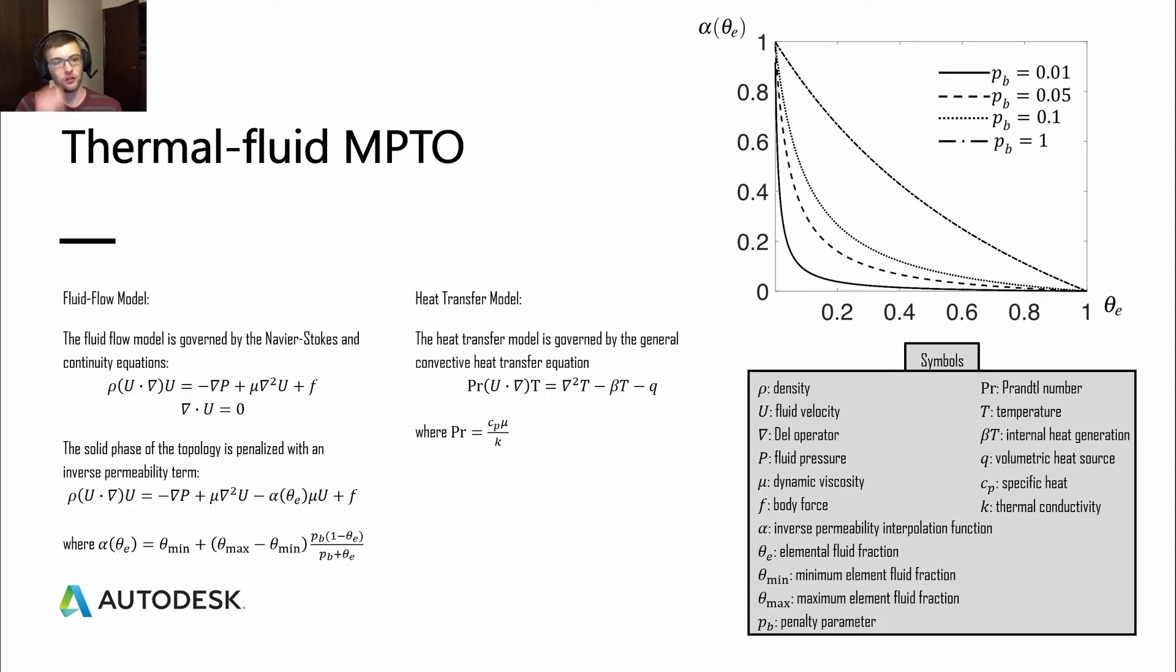Looking at the fluid flow model of a thermal fluid multi-physics topology optimization program, we see that it is governed by the Navier-Stokes equation and the continuity equations. In order to interface this with topology optimization, we add an inverse permeability term. This is used to penalize the solid phase of topology. We add this term to the Navier-Stokes equation. This alpha is an interpolated term that is used to scale the inverse permeability term from zero to one.